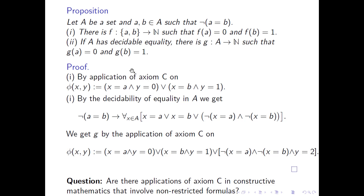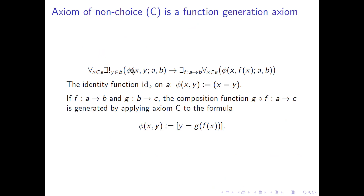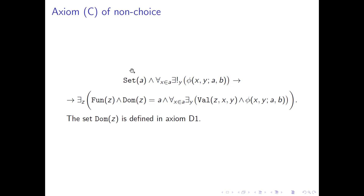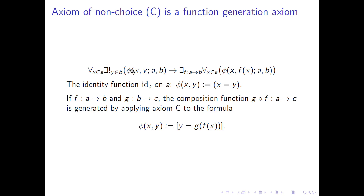There is a question: if there are applications of axiom C in constructive mathematics that involve non-restrictive formulas, do we need the full axiom? I don't know about that. For every x in A, there is a unique y in B, then you have a function. So it's not a choice, but it's a way to talk about functions. In the book of Bishop, Bishop says: I have an x, and I have a y, and I associate y to x. He formalizes this idea with this axiom — it's essentially a functional replacement.